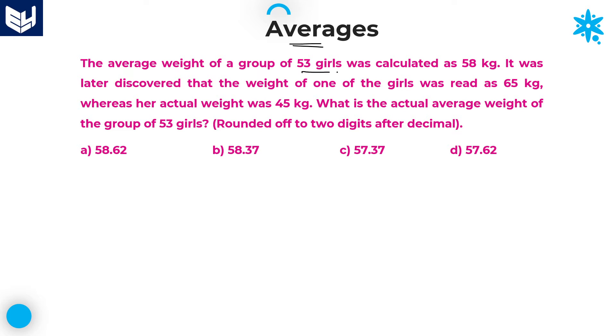The average weight of a group of 53 girls was calculated as 58 kg. It was later discovered that the weight of one of the girls was read as 65 kg, whereas her actual weight was 45 kg. What is the actual average weight of the group of 53 girls? Whenever problems are asked like this, the solution is very simple.